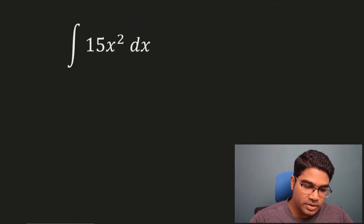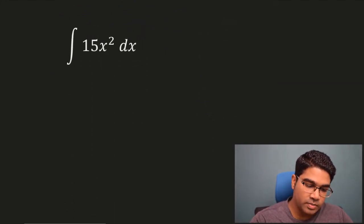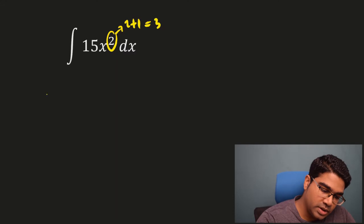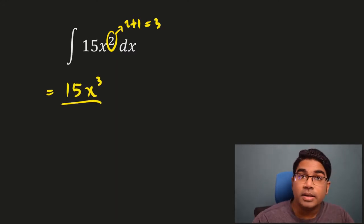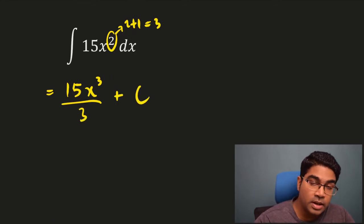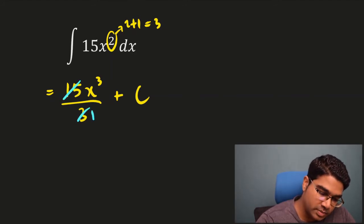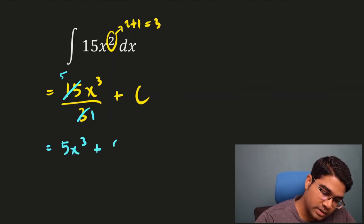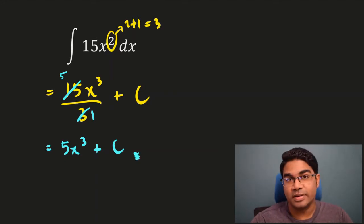Let's get into some examples. So let's say we had the integration of 15x squared with respect to x. We apply 2 plus 1, so 2 plus 1 equals 3. This gives us 15x to the power of 3 divided by the new power, which is 3, plus c. We mustn't forget to add c for an indefinite integral. We can simplify by dividing 15 by 3, giving us 5x cubed plus c. This is the indefinite integral.